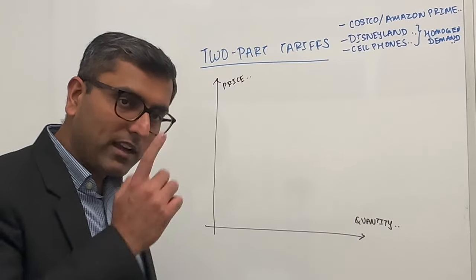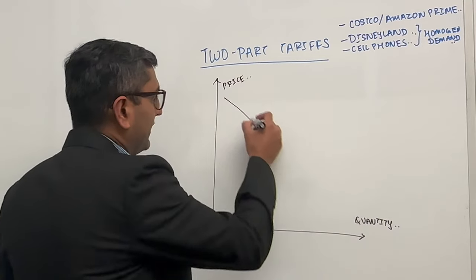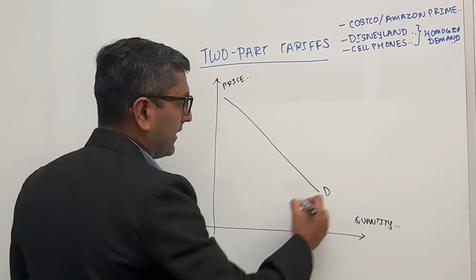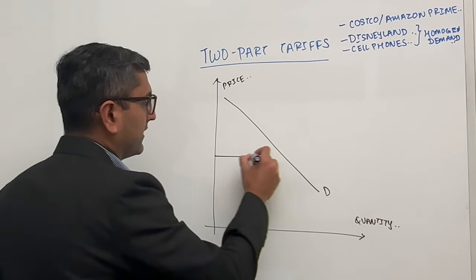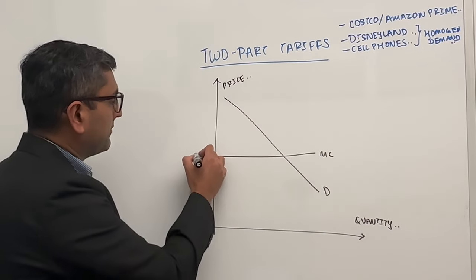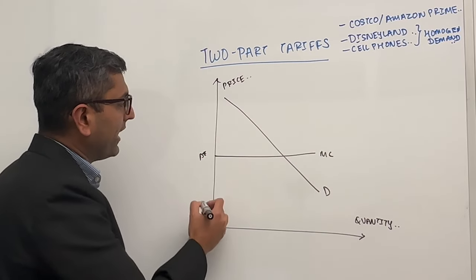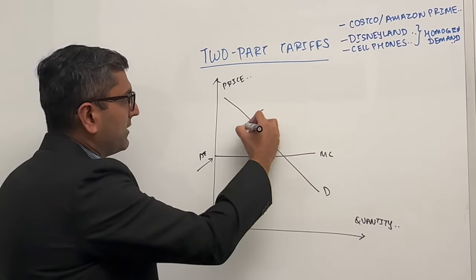So now let's imagine we had just one customer. We had just one customer and their demand looks like this and we know that our marginal cost is this. So if it was just one customer, what would you do is you would charge them a price of entry fee and you would charge them usage fee.